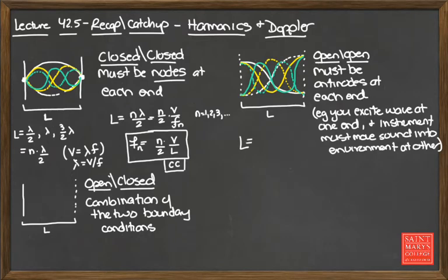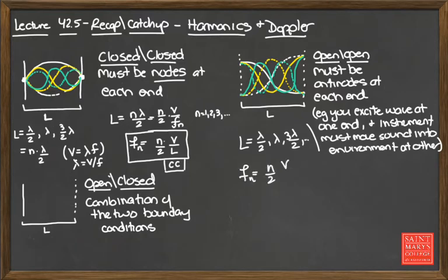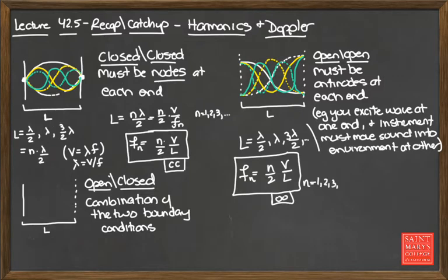So in this case, L must again be an integer multiple — we have cases of half a wavelength, a full wavelength, one and a half wavelengths, etc. The harmonics for an open-open system are the same formula as the closed-closed system: F_n = nv/(2L), where n equals 1, 2, 3, and so on.